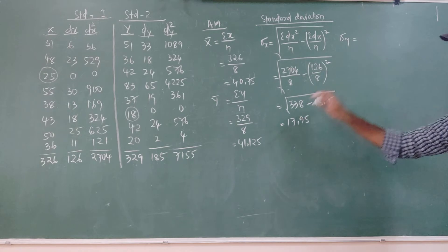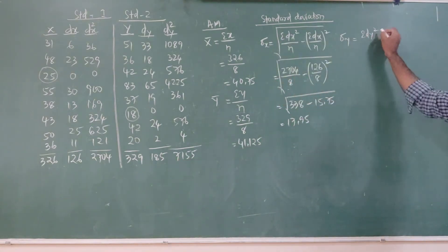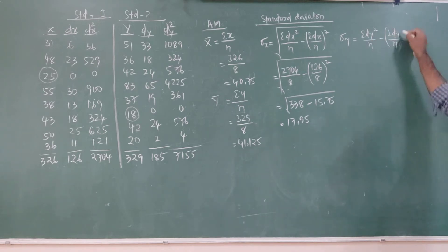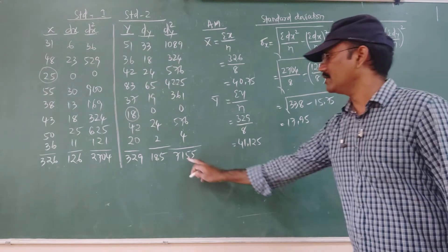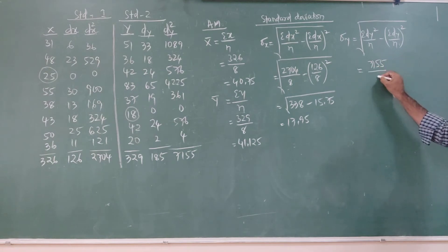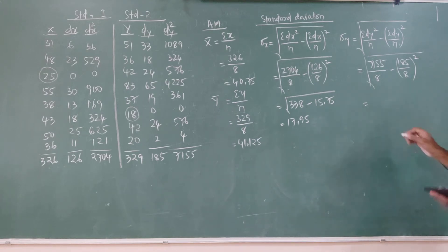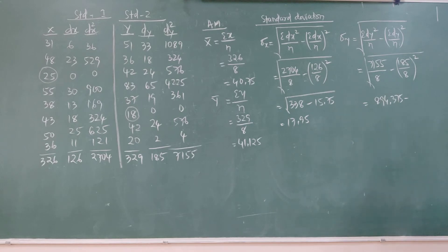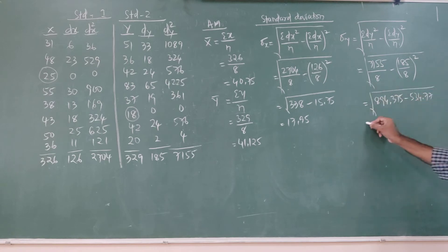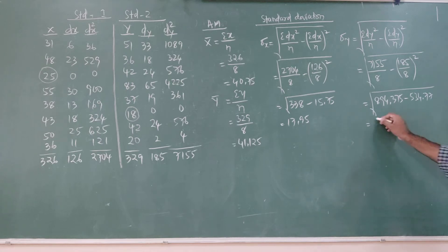Now use the standard deviation formula for y: √(summation of dy² / n − (summation of dy / n)²). The summation of dy² is 7155, and summation of dy is 185. So: √(7155/8 − (185/8)²) = √(894.375 − 534.77) = √359.605 = 18.96.